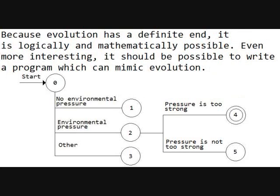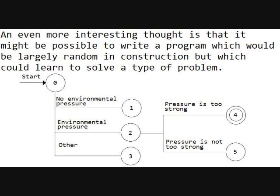Because evolution has a defined end, it is logically and mathematically possible. Even more interesting, it could be possible to write a program which can model evolution. An even more interesting thought is that it might be possible to write a program which would be largely random in construction, but can learn to solve a type of problem by following this sort of finite state machine. Thank you for your time — I look forward to your comments as always.